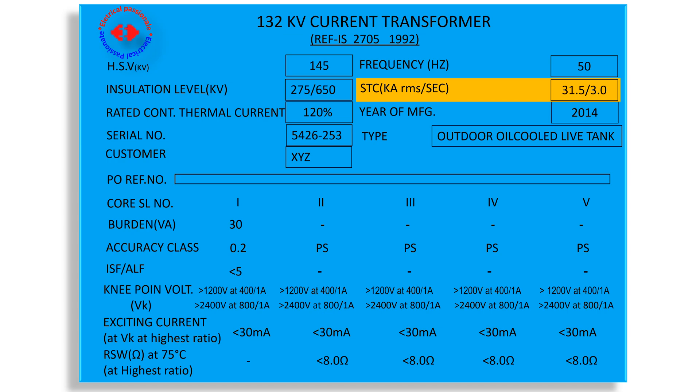Next STC, short time current. Here 31.5 kA RMS for 3 seconds is mentioned at our CT nameplate. It indicates that the CT is capable of carrying 31.5 kA RMS current under short-circuited condition for 3 seconds without any damage to the CT.